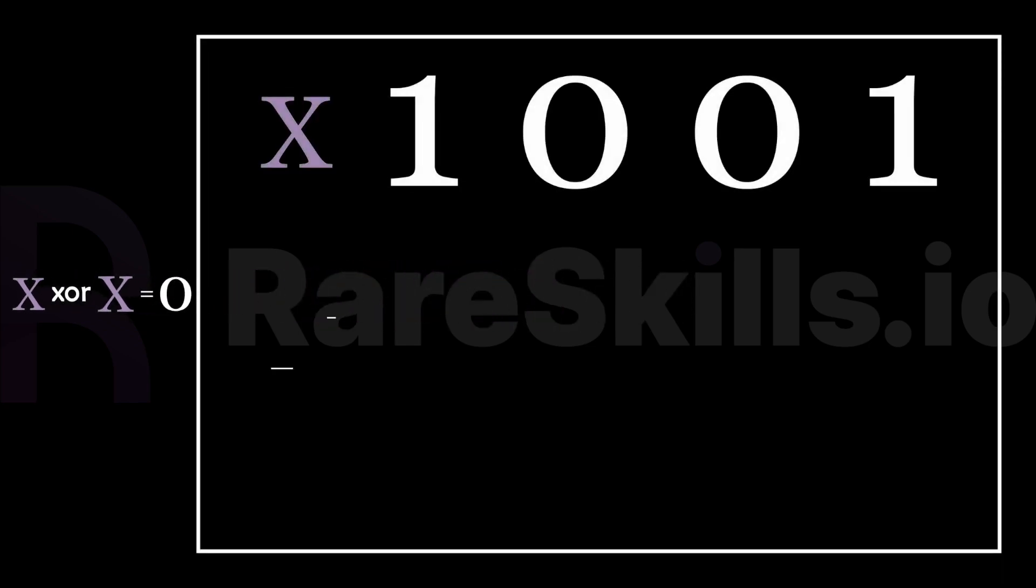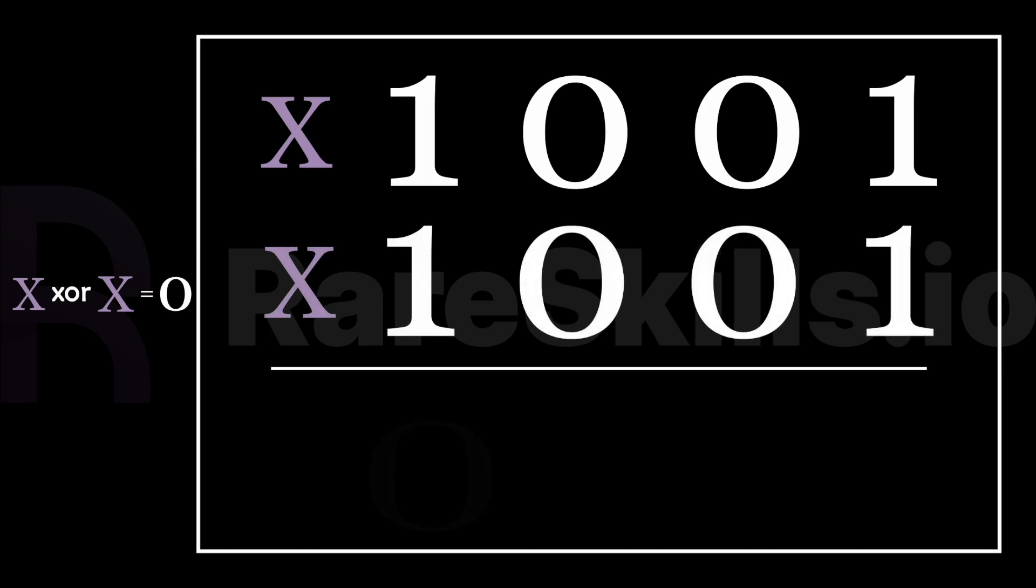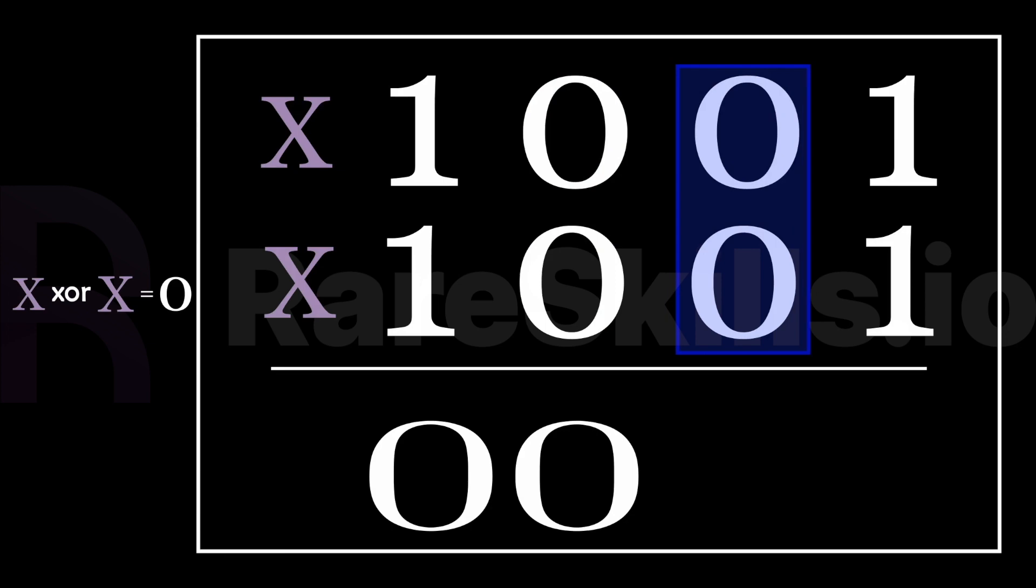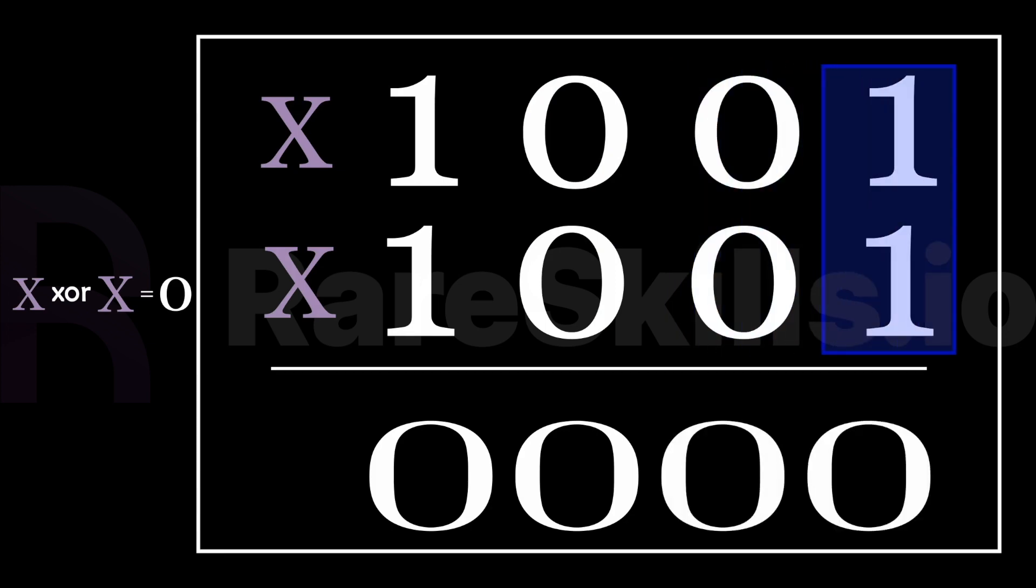The second rule of xor is that any variable exclusive or'd with itself is 0. Remember, 1 xor 1 is 0, and 0 xor 0 is 0. So if a variable is xor'd with itself, that is exclusive or'd with itself, is 0.